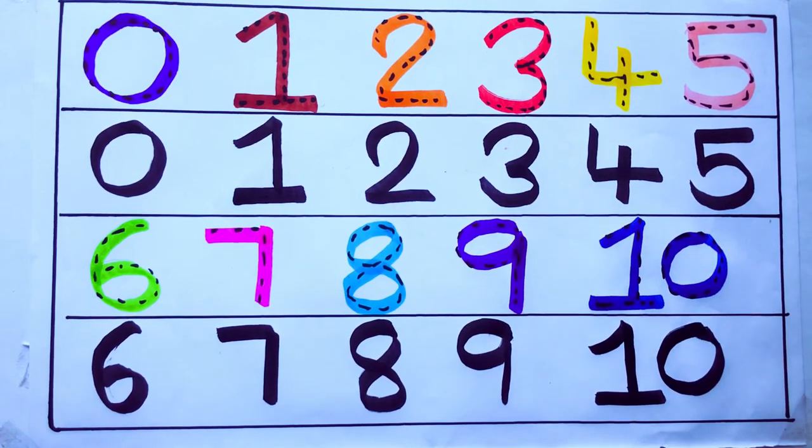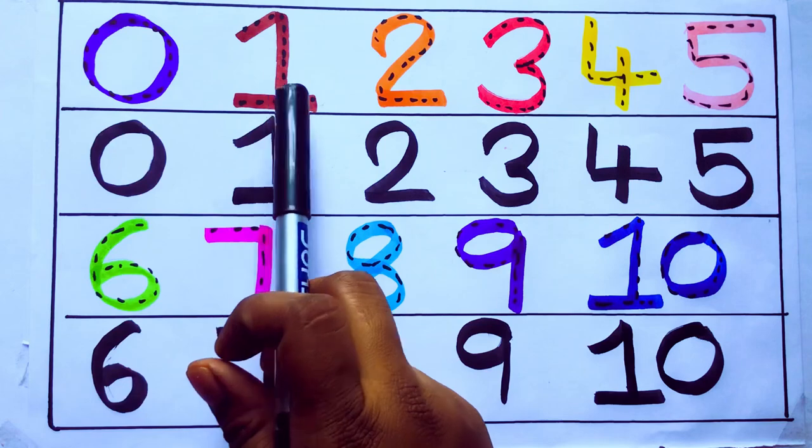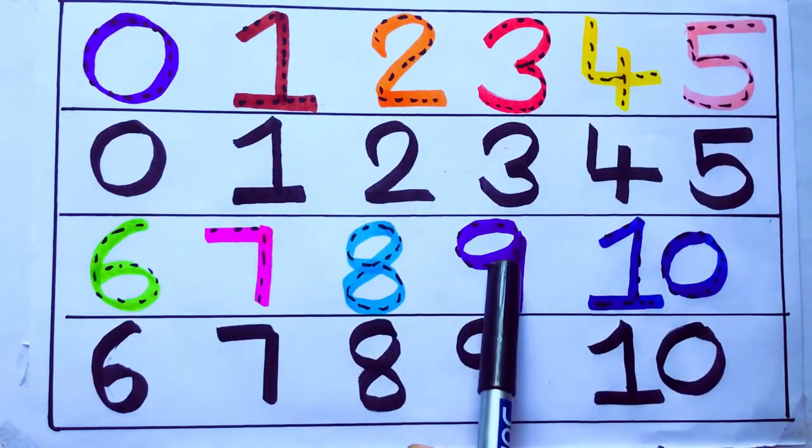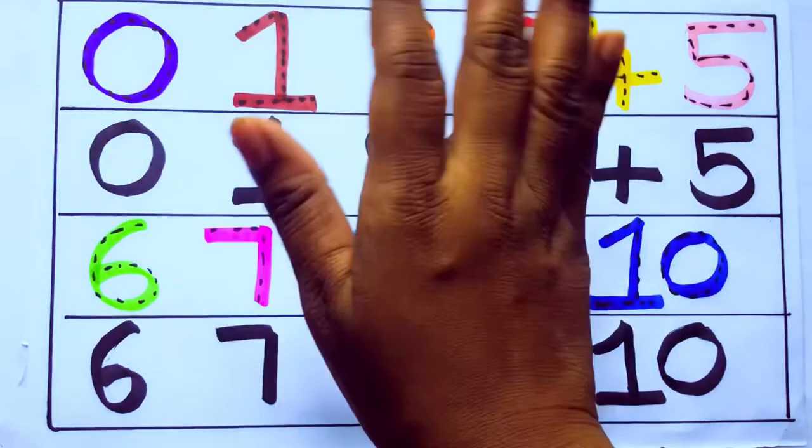One second learning numbers: 0 1 2 3 4 5 6 7 8 9 10. Okay. Bye kids.